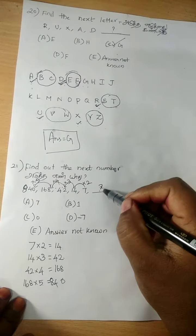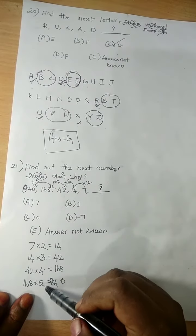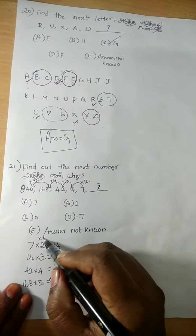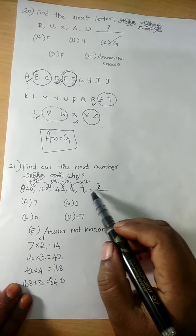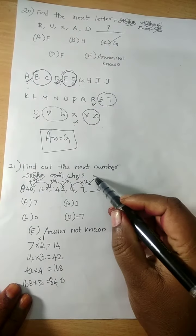So what's the number at the last? See here, 2, 3, 4, it's in order. So before 2, what will come? Yes, 1. Here, 1. The number multiplied by 1, we will get 7.